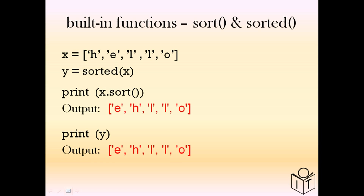There are two ways to sort a list. In this example x is ['H','E','L','L','O']. We can create another list Y using 'sorted(x)', or we can sort x in-place with 'x.sort()'. Either way, the output is ['E','H','L','L','O'] — those are 'sort' and 'sorted'.